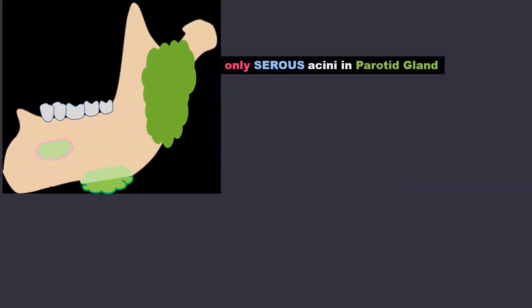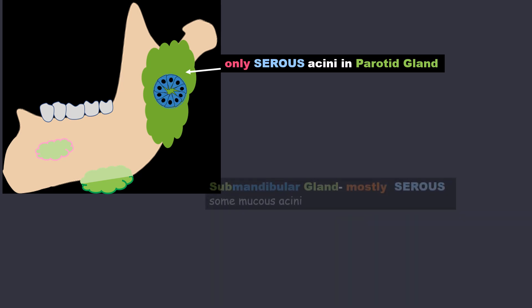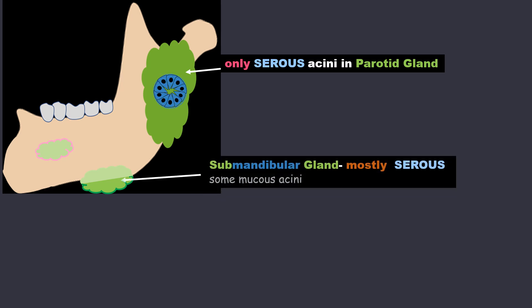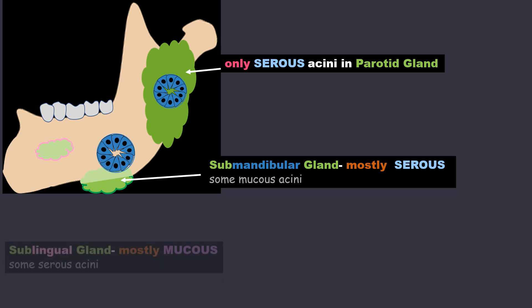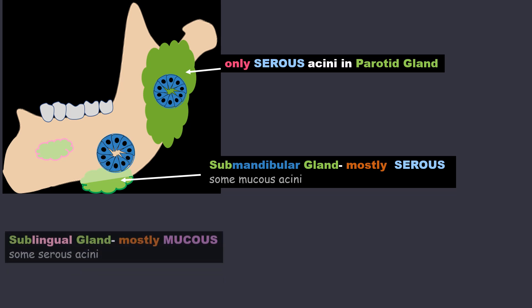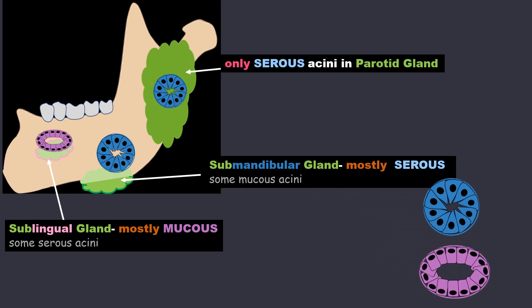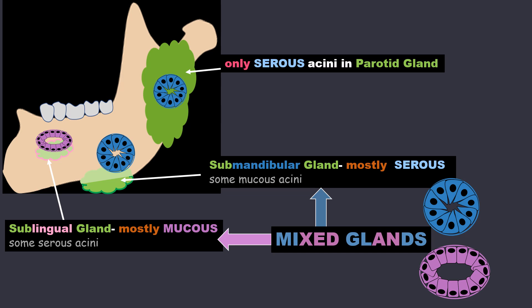Only serous acini are present in the parotid gland. The submandibular gland has mostly serous type of acini with some mucus acini also present. The sublingual gland has mostly mucus type of acini but there are also some serous acini present. Because of the presence of both types of cells in the submandibular and sublingual gland, they are called mixed glands.